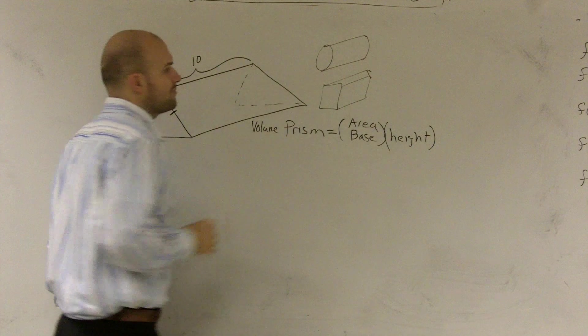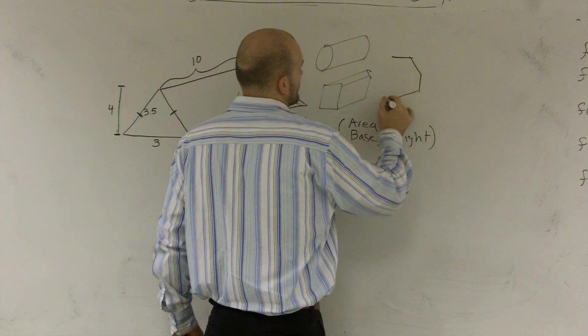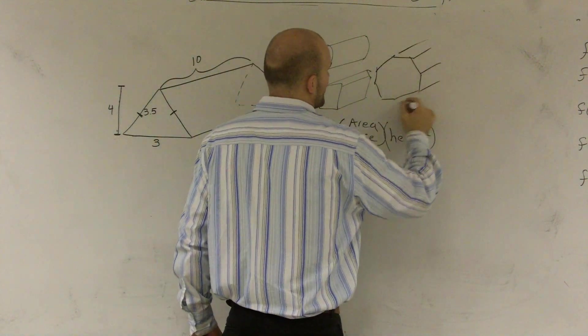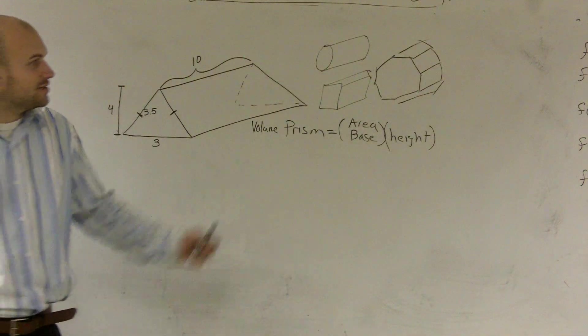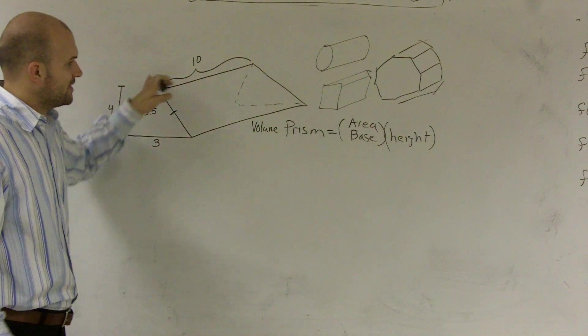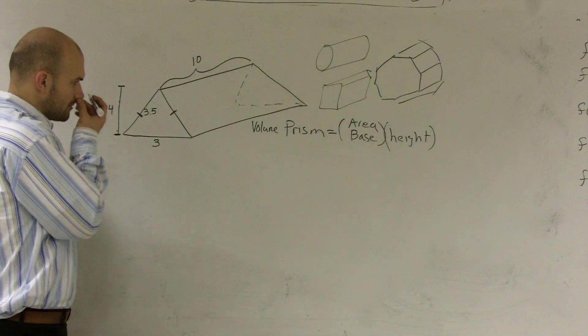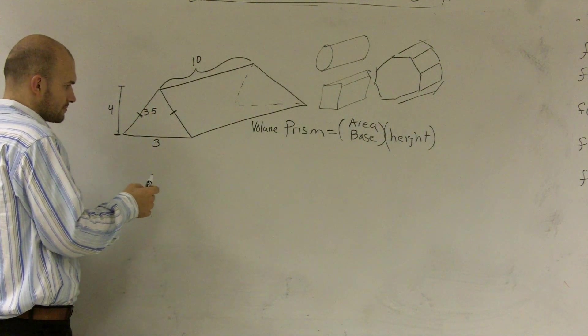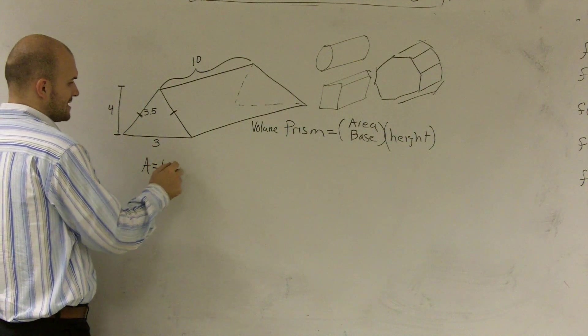I don't care what kind of prism you're dealing with. Even if it's an octagon, even if you're doing an octagonal prism, you still need to find the area of the octagon. Area equals base times height.